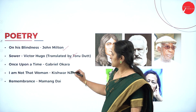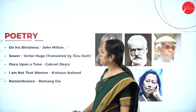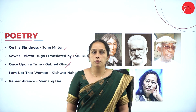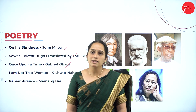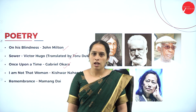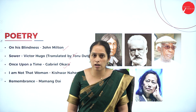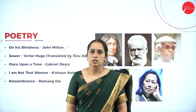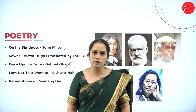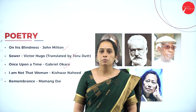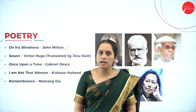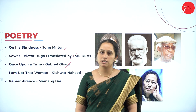The next poem is Once Upon a Time by Gabriel Okara. This poem was written in the backdrop of Nigeria's independence. It is a conversation between a father and his son, focusing on a father's attitude towards cultural change. It also reflects upon the artificial relationships and manners prevailing in the present world, with a wide comparison between the past and the present.